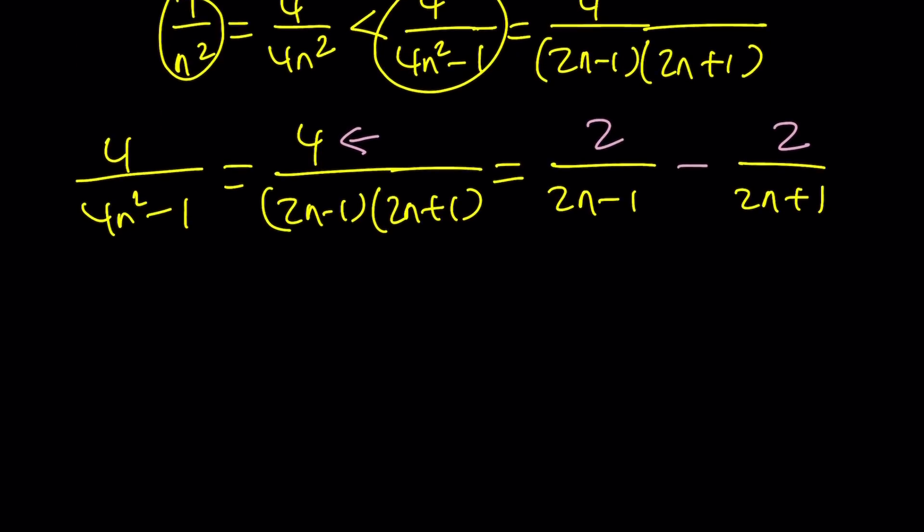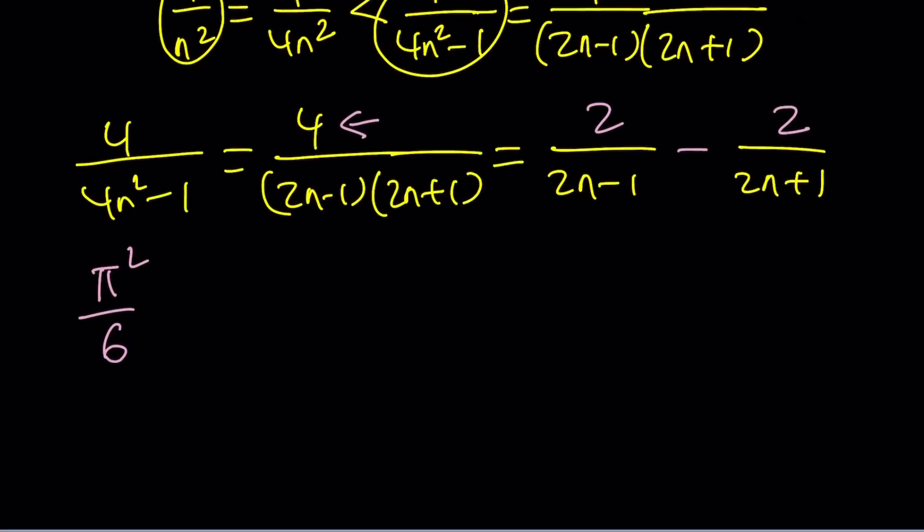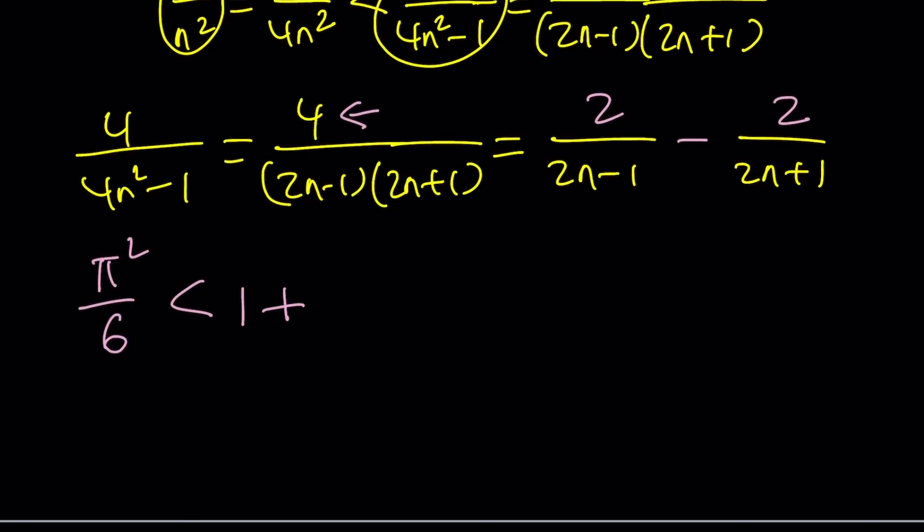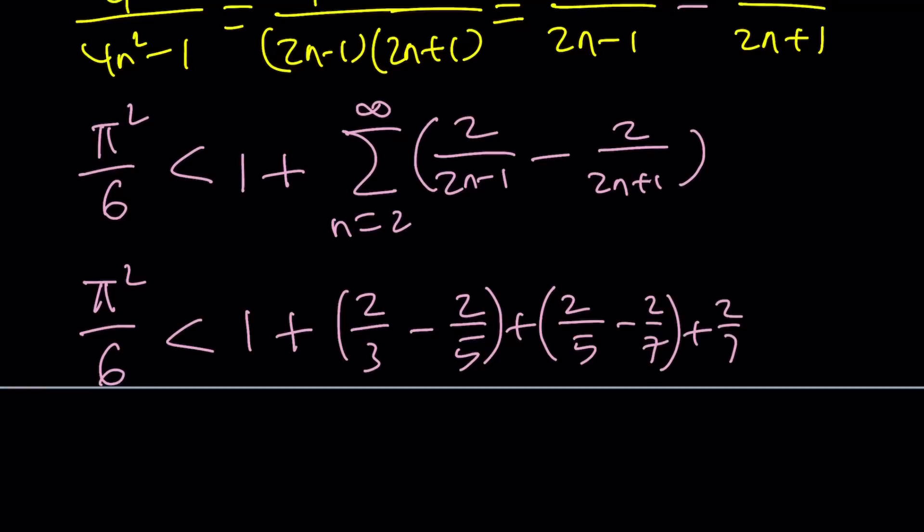Now we're going to telescoping sum. Therefore, here's the conclusion. Pi squared over 6 is now less than 1 plus this sum. n equals 2 to infinity, 2 over 2n minus 1, minus 2 over 2n plus 1. And notice that this is a telescoping sum, which means the terms are going to cancel. You're going to see when we expand it, okay? Let's go ahead and expand it. Pi squared over 6 is less than 1 plus. Now when you replace n with 2, you're going to get 2 over 3 minus 2 over 5. And when you do with the next term, which is 3, you're going to get 2 over 5 minus 2 over 7, and then 2 over 7 minus 2 over 9, ad infinitum. Okay. So on and so forth.